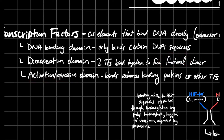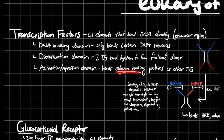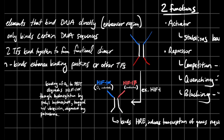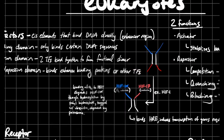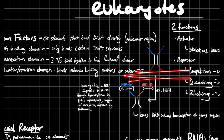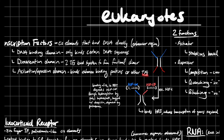For your activation/repression domain, these are going to bind your enhancer binding proteins or other transcription factors. If we look at this visually, with the DNA right here, the thing that binds to the DNA is obviously the DNA binding domain. You can see the dimer right there — the dimerized functional unit of the transcription factor — as well as the activation/repression domain, which interacts with different other factors.